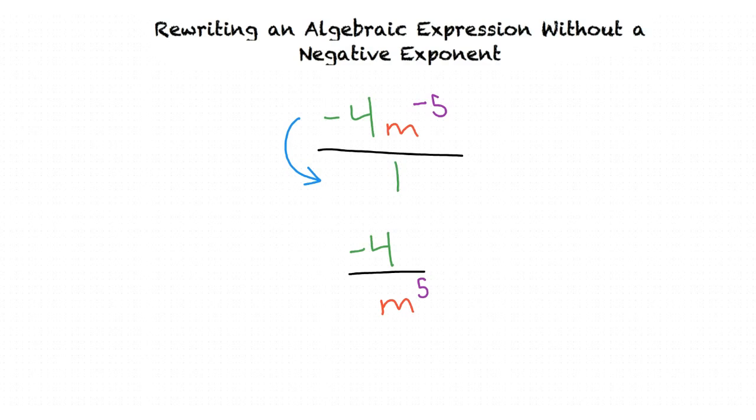Wait, why wouldn't the negative 4 also move to the denominator? If we look at our exponent, it is only attached to our m variable. If there were parentheses around the negative 4 and m, this would indicate that our exponent is attached to both. We only move numbers or variables that are attached to the negative exponent.